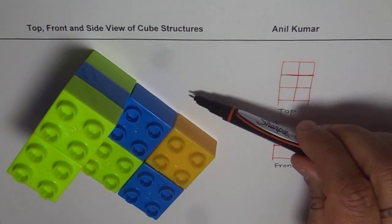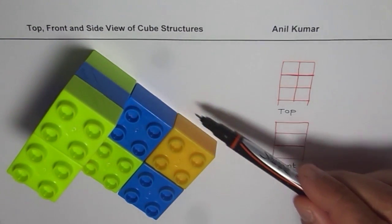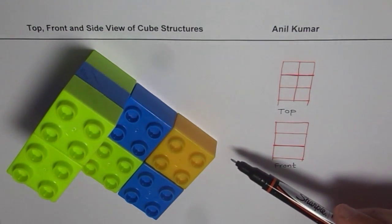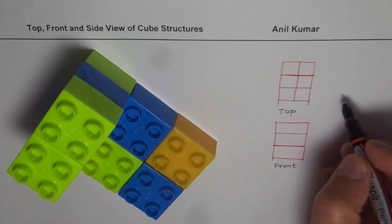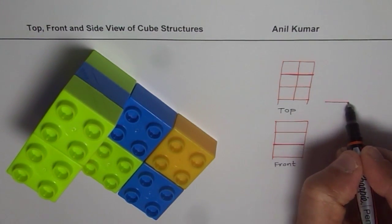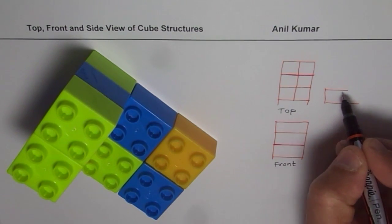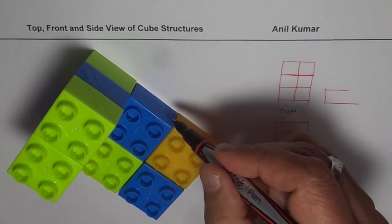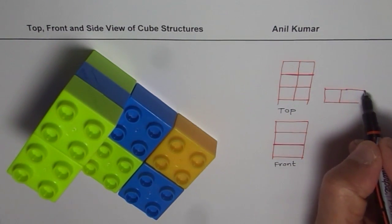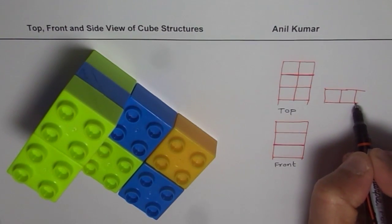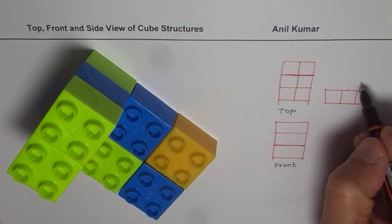From the right side, looking in this direction, the shape is L-shaped — an L which is reflected in a mirror, or a reverse L. To sketch this, draw an L-shaped structure: three blocks at the bottom and then one over the other going up.